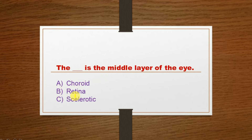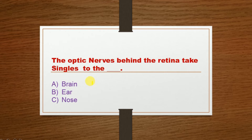Next question: The choroid layer is the middle layer of the eye. Option A: Choroid layer, Option B: Retina, Option C: Sclerotic. The correct option is Option A: Choroid layer. Next question: The optic nerve behind the retina takes signals to the dash. Option A: Brain.